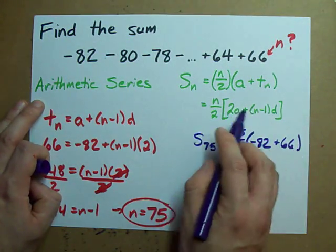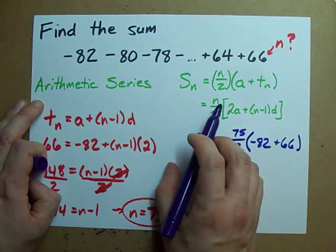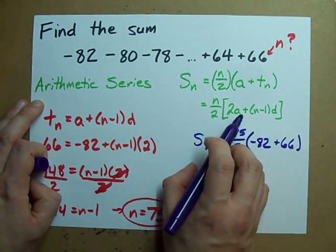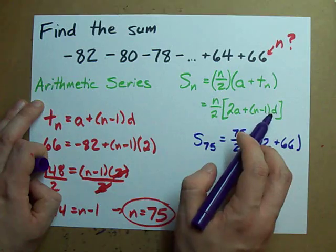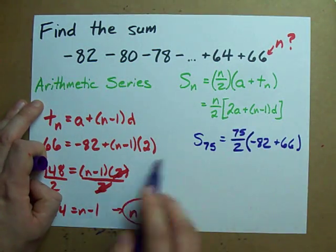Again, you could have used this. You plug in 75 for n, plug in negative 82 for a, and plug in 2 for d, just like you did here.